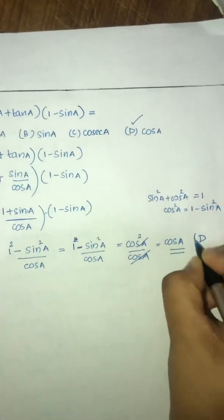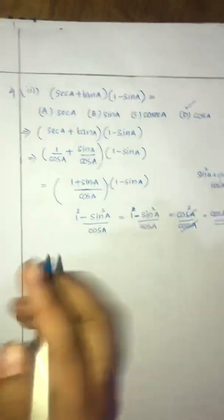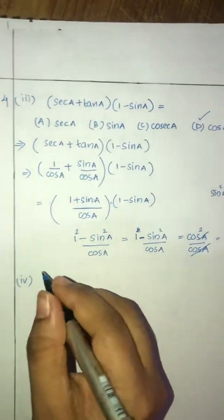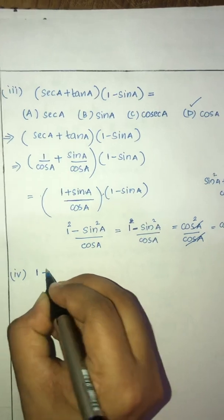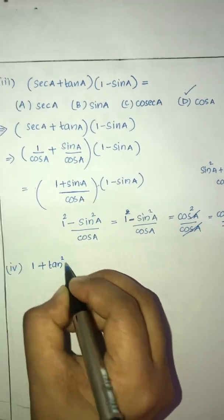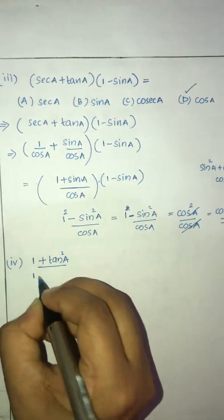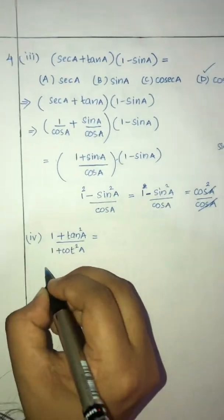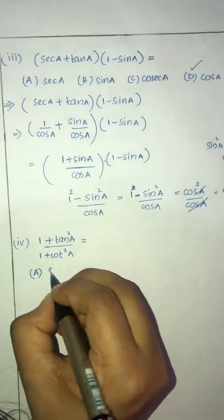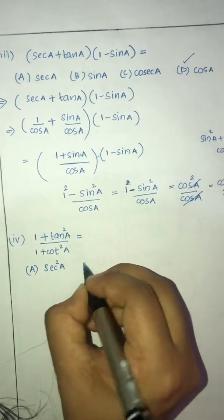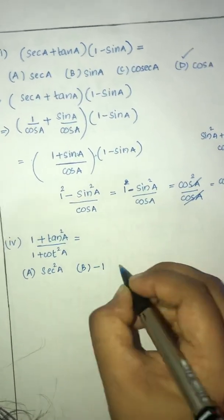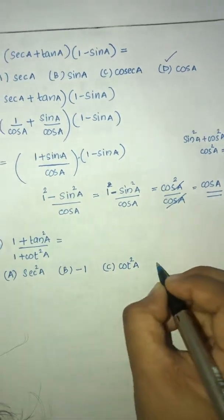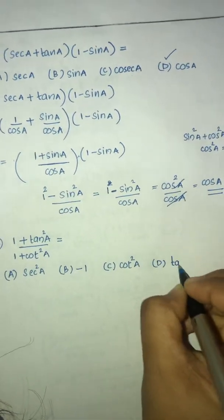The fourth sub-question is: (1 + tan²A) divided by (1 + cot²A) is equal to — option A is sec²A, option B is -1, option C is cot²A, and option D is tan²A.